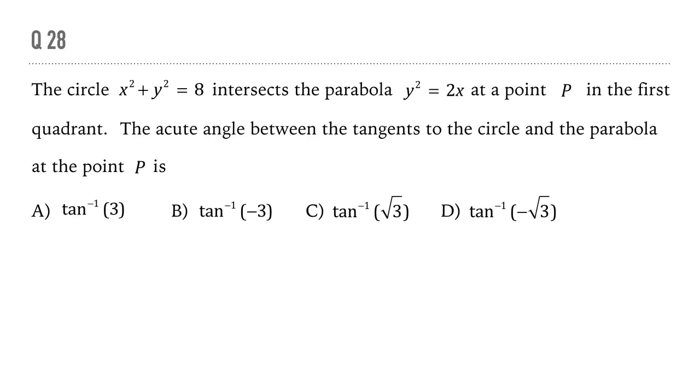Take a moment to read the question. We have a circle x² + y² = 8 which intersects a given parabola y² = 2x at a point P in the first quadrant, and we have to find out the acute angle between the tangents to the circle and the parabola at this point. How do we do this question?